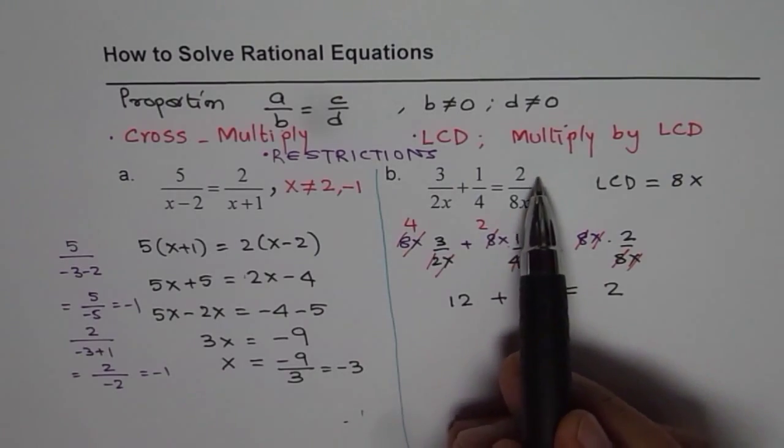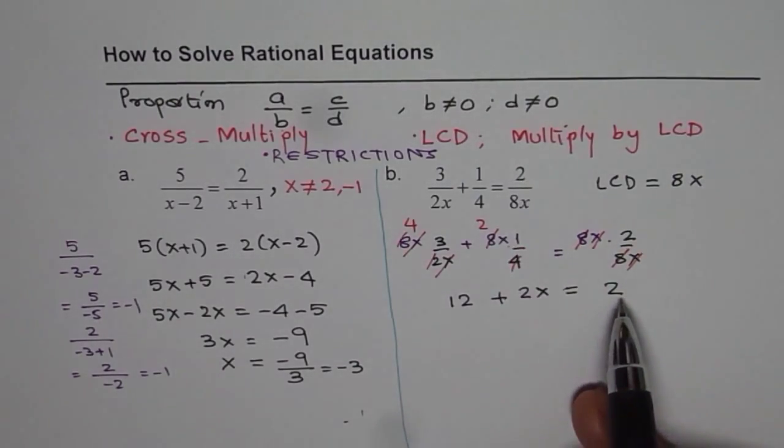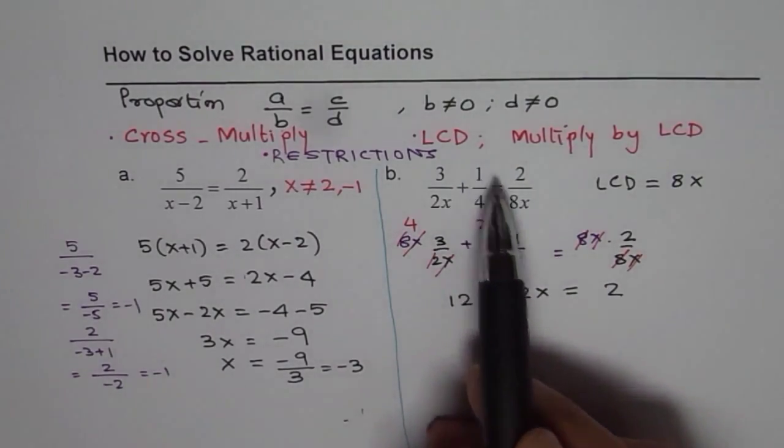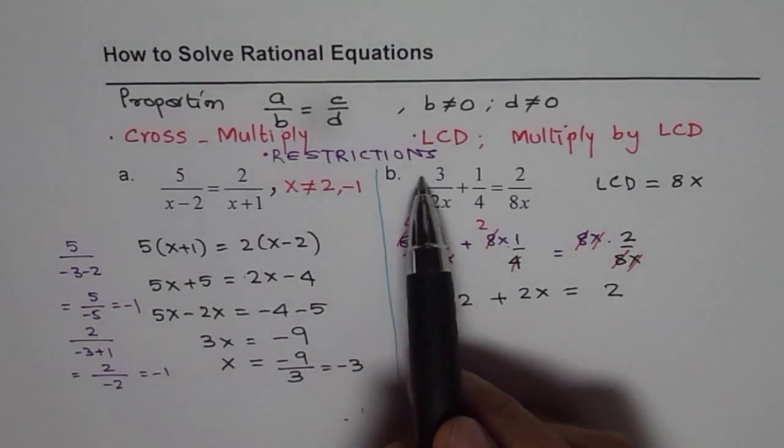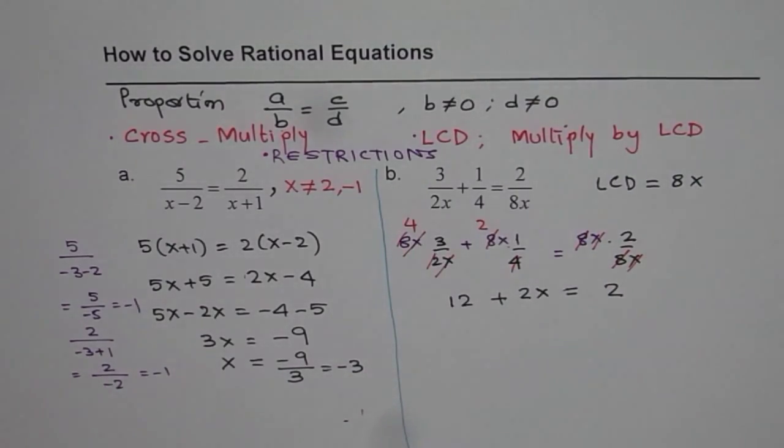So when you multiply it by 8x, you get 2 on the right side. Here you get 2 times x and in this case 4 times 3 is 12. That is what you get.